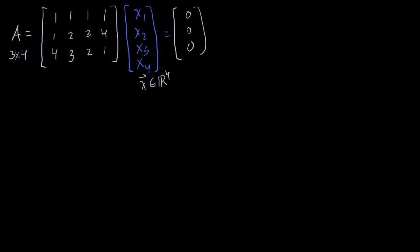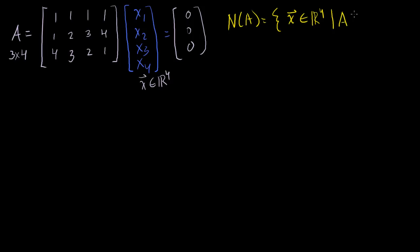So how do we figure out the set of all these x's that satisfy this? The null space of A is the set of all vectors that are members of R4 — since this is a 3×4 matrix — such that A times any of these vectors equals the zero vector, which in this case is the zero vector in R3.